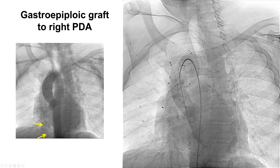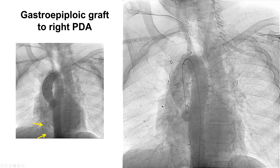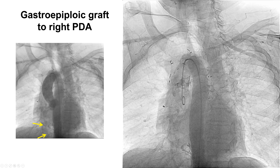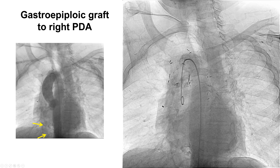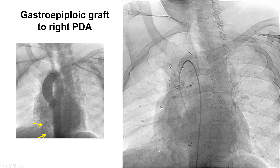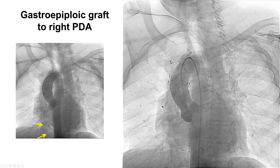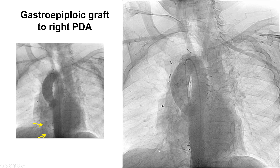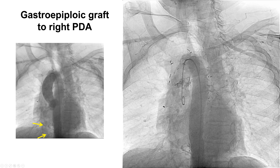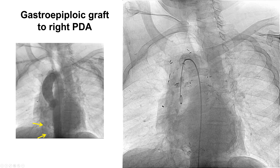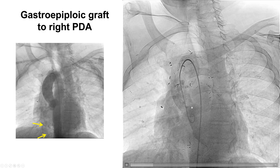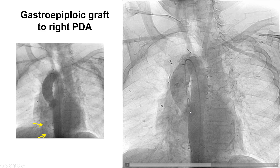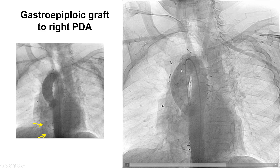In cases like this, when we cannot find a graft, one way to go is to perform an aortogram. Another way would be to send the patient for an emergency CTA, but the problem is here it's an ST-elevation myocardial infarction and time is muscle. So here is the angiogram — 20 cc's for 3 seconds, for a total of 60 cc's in the ascending aorta.